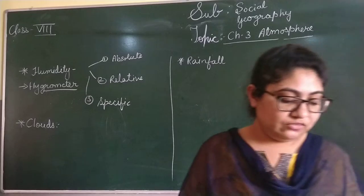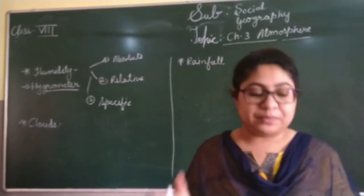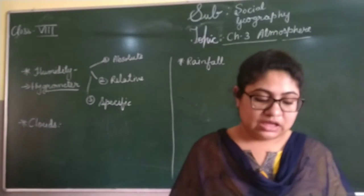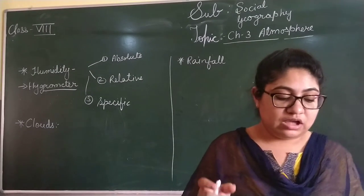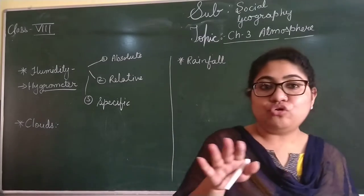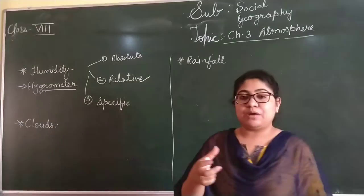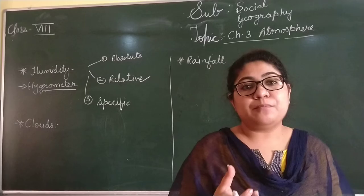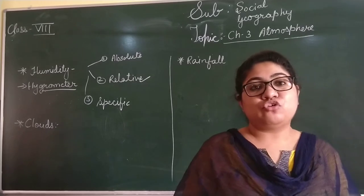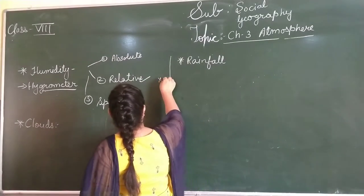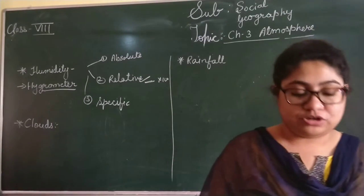The next is relative humidity. Relative humidity is the ratio between the actual amount of water vapour present in the air and the amount of water vapour the air can hold at that temperature. So it is the ratio between what amount of water vapour is in the atmosphere and what amount the temperature allows it to hold.